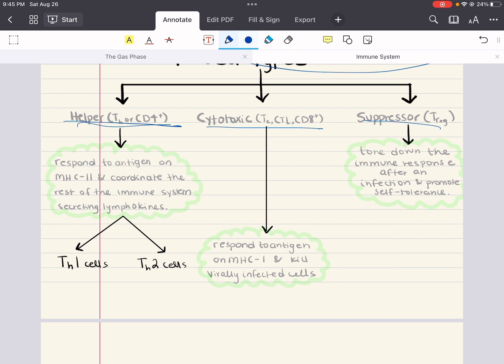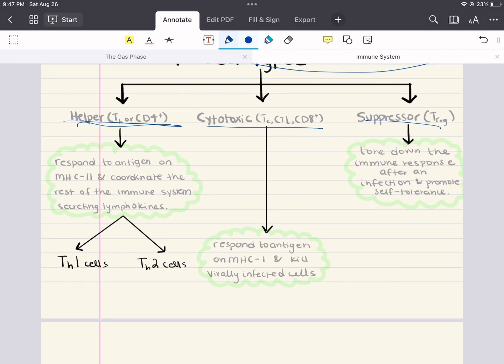There are two types of helper T cells: Th1 cells and Th2 cells. Th1 cells secrete interferon gamma, which activates macrophages. Th2 cells activate B cells, primarily in parasitic infections.